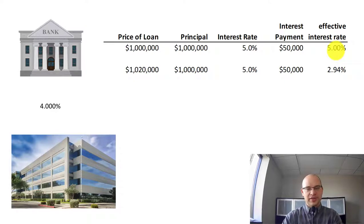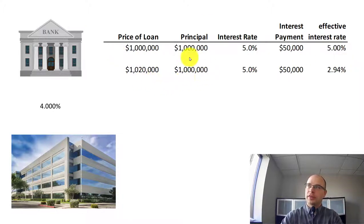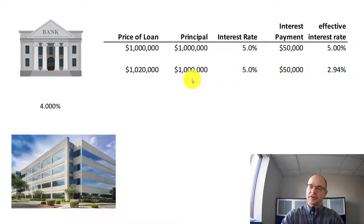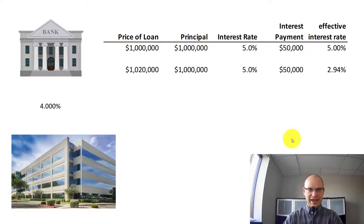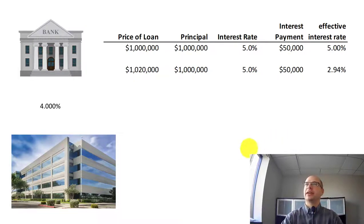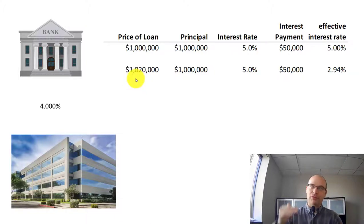This is where it can get confusing. There are good reasons why an investor might sometimes be willing to pay a premium for a loan. For instance, let's look at a second scenario where an investor pays $1,020,000 for a loan that is only going to pay back a million dollars at maturity. They're still going to earn their $50,000 — the 5% of the million dollar loan principal. We can calculate that even though the investor paid a premium, the interest payment is still high enough that the investor ends up with a positive yield. The most important point: when the price of debt increases, the yield or effective interest rate goes down.